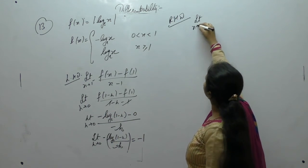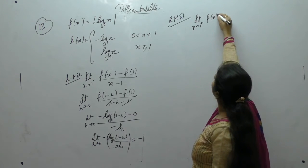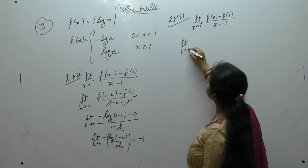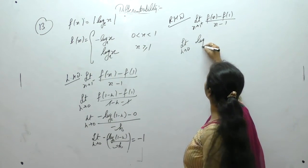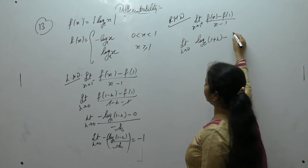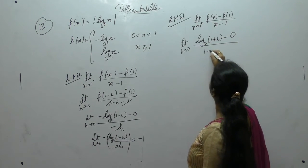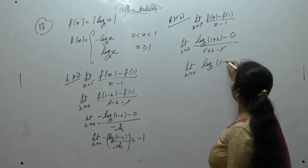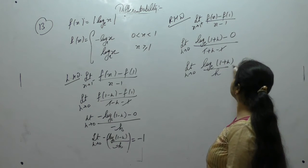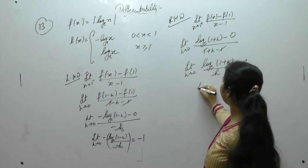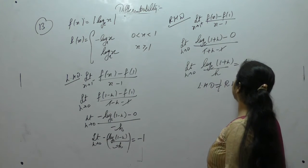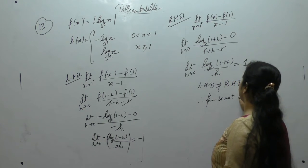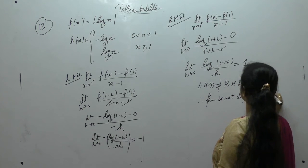Now the right hand derivative: limit x tends to 1 positive of [f(x) − f(1)] / (x − 1). When x > 1, function has positive value log x. Writing as h tends to 0: [log(1 + h) − 0] / (1 + h − 1) = log(1 + h) / h, which has limit 1. Since left hand derivative (−1) is not equal to right hand derivative (1), the function is not differentiable for x > 0.